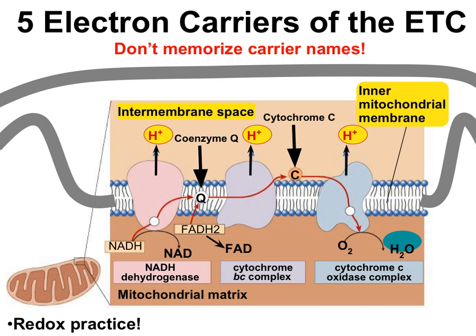This compartment way outside is the cytoplasm. Electron transport chain components are embedded in the inner mitochondrial membrane. The inner mitochondrial membrane is highly folded into cristae, and cristae increase the surface area of the inner mitochondrial membrane so more electron transport chain proteins can be embedded.